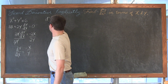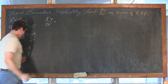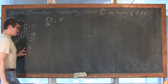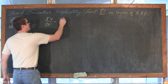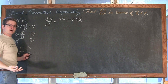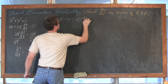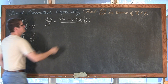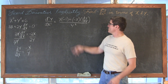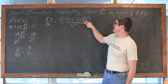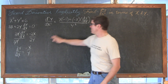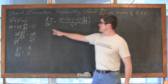Now to find the second derivative we are going to follow the quotient rule. We take the denominator y times the derivative of the numerator — the derivative of negative x with respect to x is negative 1 — minus the numerator times the derivative of the denominator with respect to x, which is dy over dx, all over the denominator squared. That is our second derivative expression, but it is in terms of x, y, and dy/dx. We need to substitute dy/dx equals negative x over y to get it in terms of x and y only.